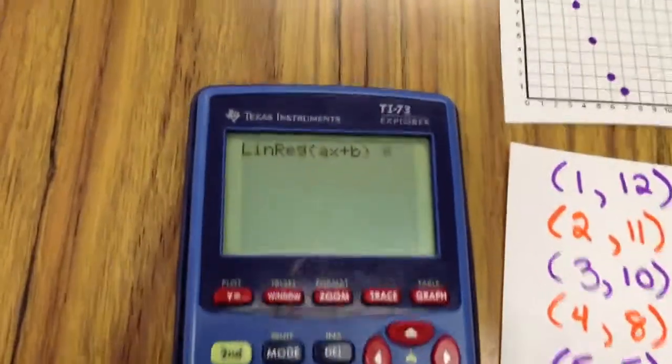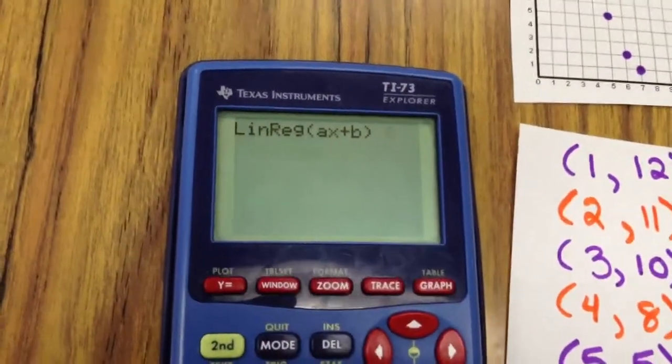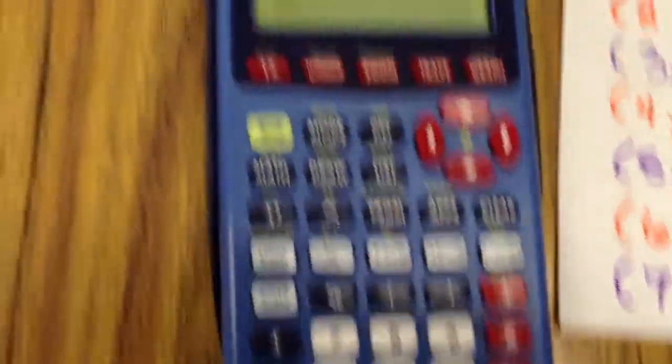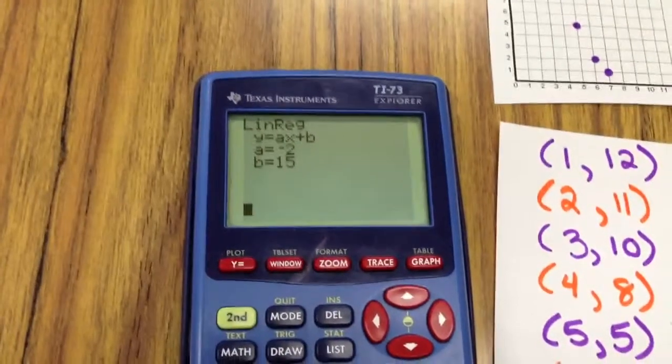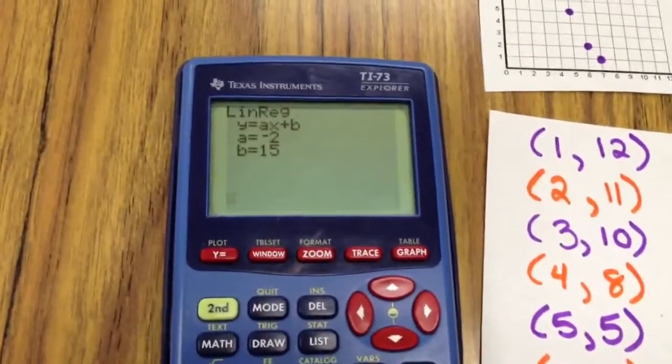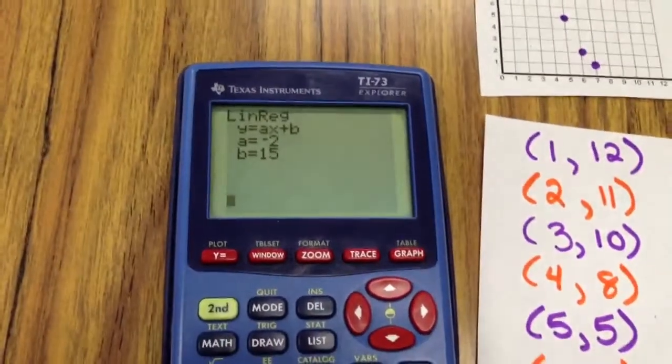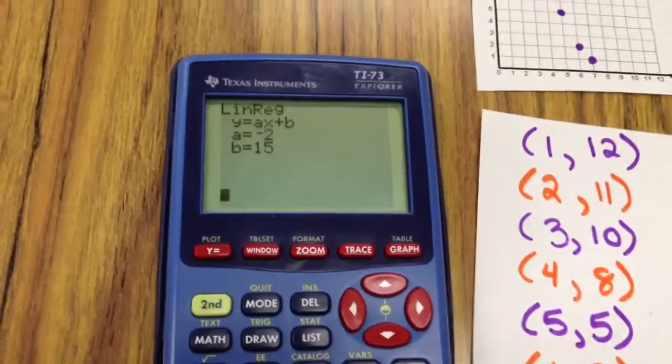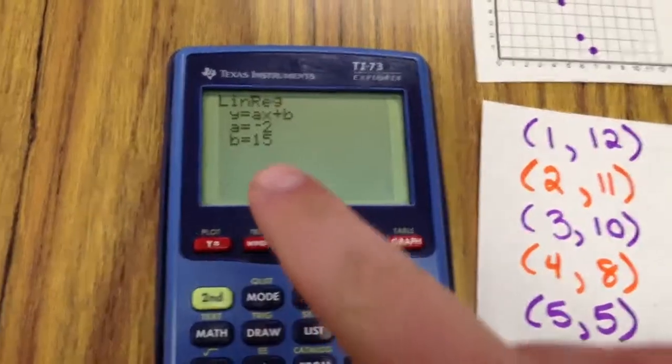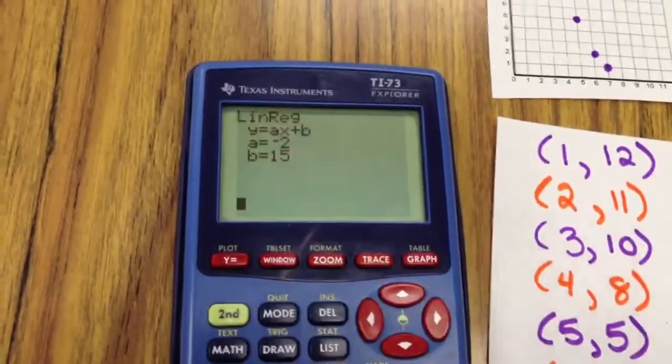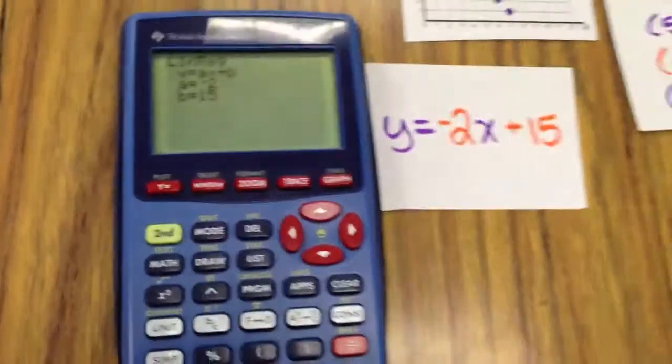Oh, there's linreg, ax plus b. I'm going to hit enter one more time. Oh, and boy howdy, I got myself an equation. Y equals ax plus b where a is negative 2 and b is 15. Well, what does that mean? What I'm going to do is I'm going to substitute negative 2 for a and 15 for b. And that would look just like this.